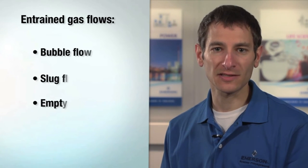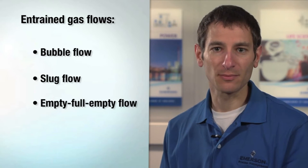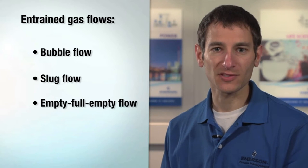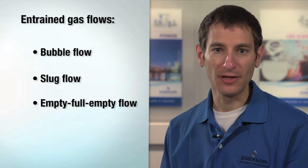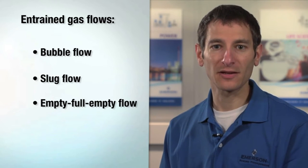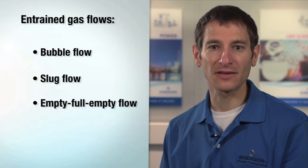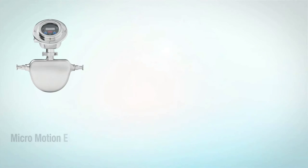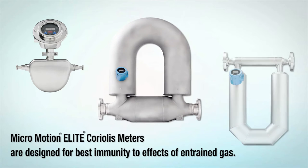We'll discuss three distinct types of entrained gas flows: bubble flow, slug flow, and empty-full-empty flow, and how they can occur both intentionally and unintentionally. Micromotion Elite Coriolis meters are designed for best immunity to the effects of entrained gas.